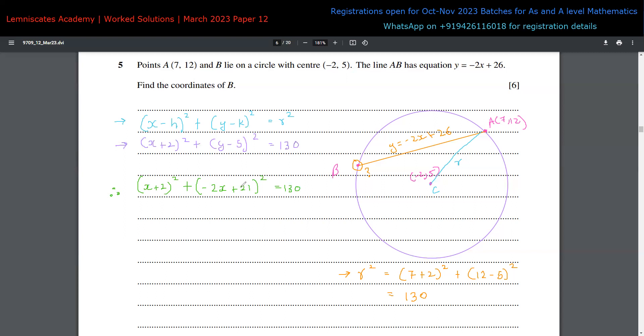This will be a quadratic equation giving two values of X. One will be 7 because the line passes through point A, and the other will be for point B. Expanding the brackets: X² + 4X + 4 plus 4X² - 84X + 441 = 130.